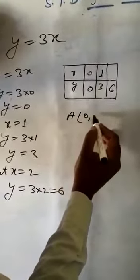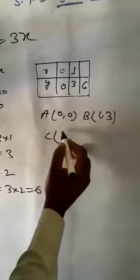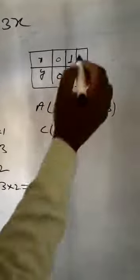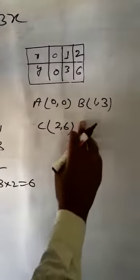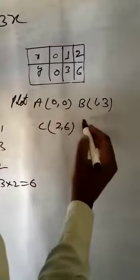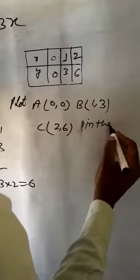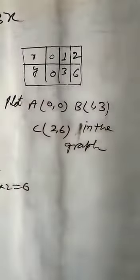A 0 comma 0. B 1 comma 3. C x equal to 2, 2 comma 6. Plot ABC on the graph and draw a line.